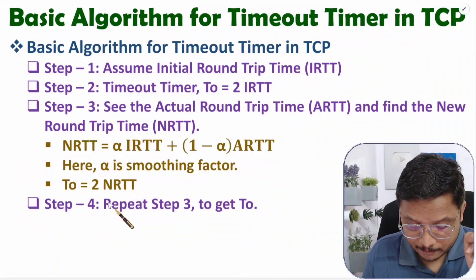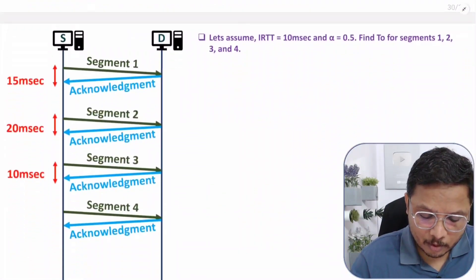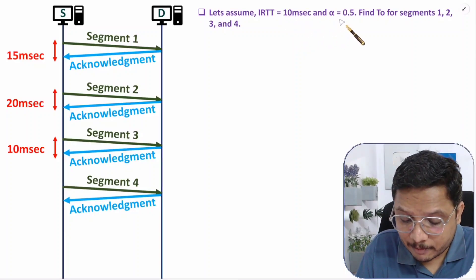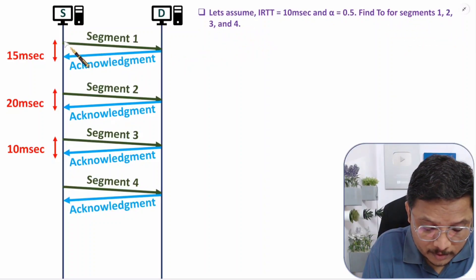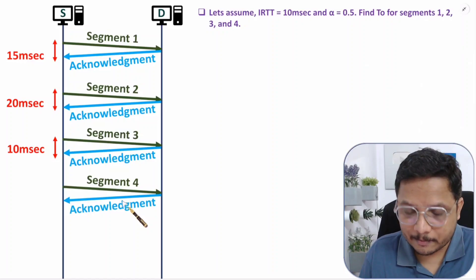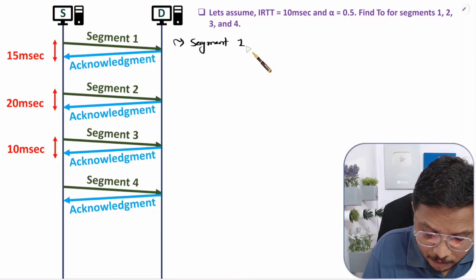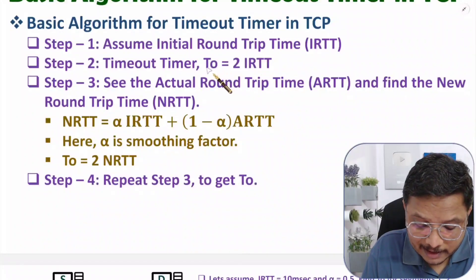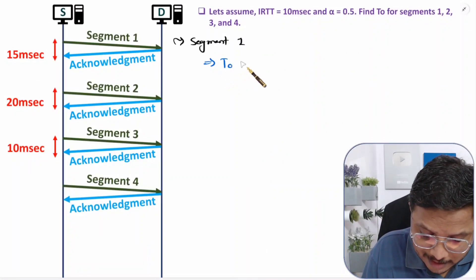We keep repeating step three to get T0. Now let me explain this with a practical example. We assume IRTT = 10 milliseconds and alpha (smoothing factor) = 0.5. We will find the timeout time period T0 for segments 1, 2, 3, and 4.